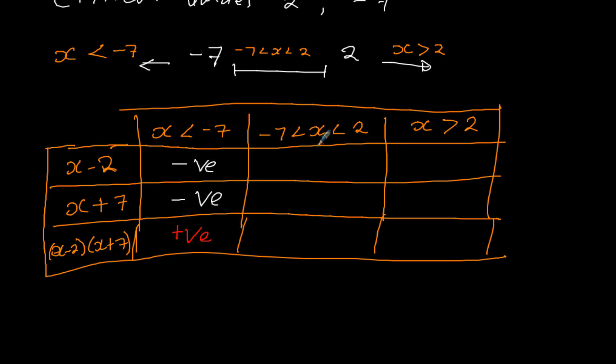So we are done with this part. Let's go to the values in between, between negative 7 and 2. Use any values. Let's use 0. If I put 0 here, 0 minus 2 gives me negative 2, which is just negative. 0 plus 7 gives me positive 7. And when I multiply negative times positive, I get negative.